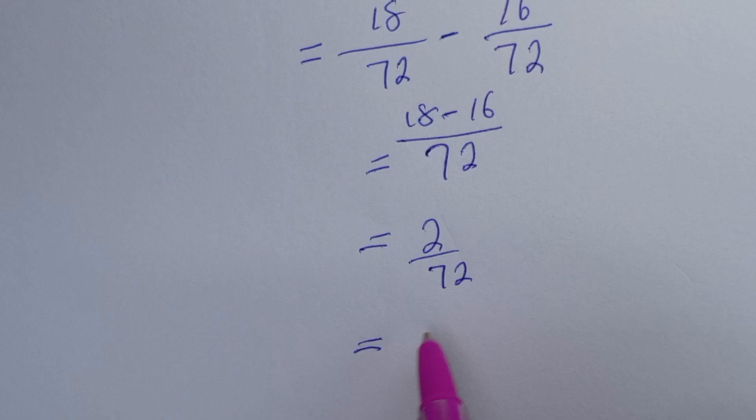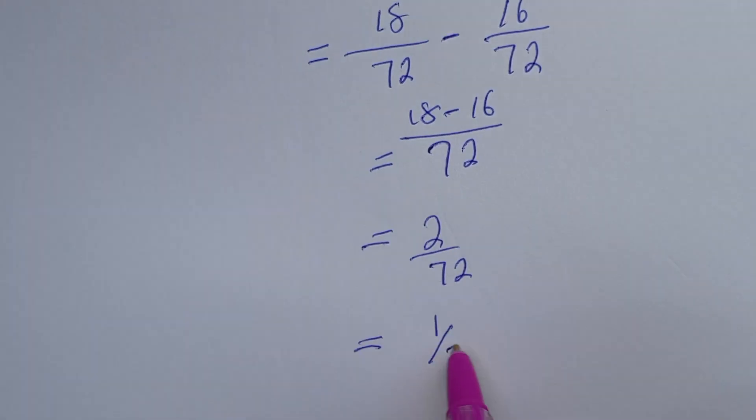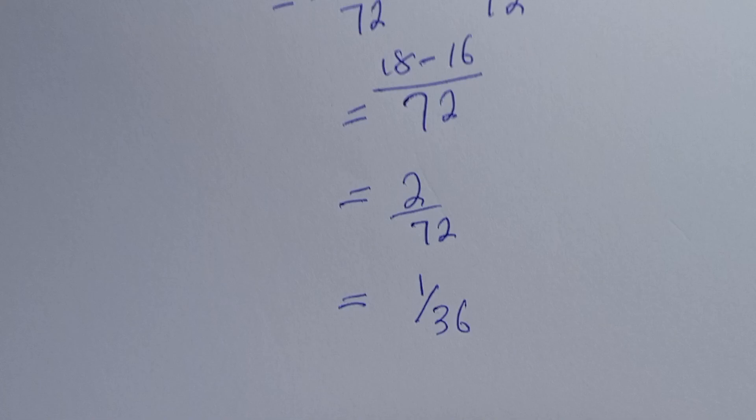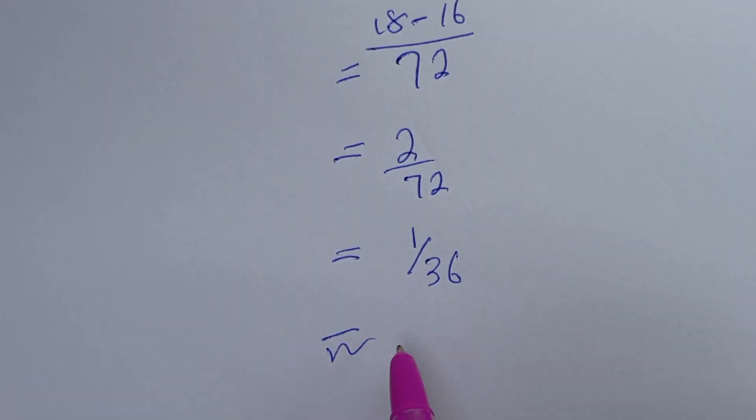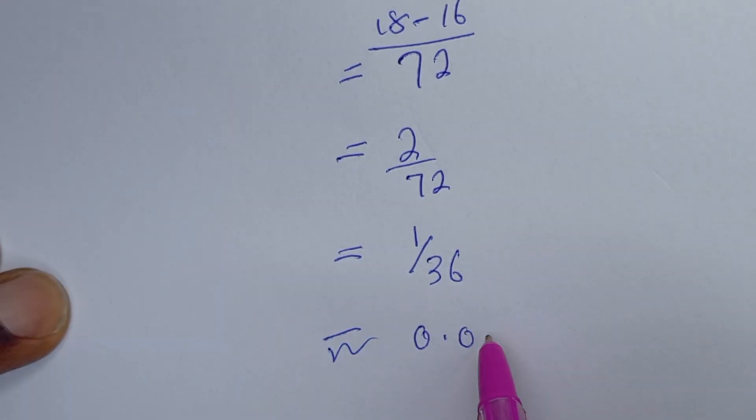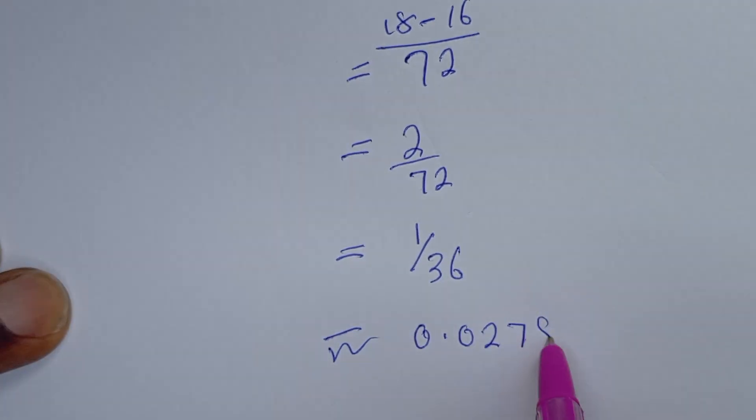This is equal to 1 over 36. Then this is approximately equal to 0.0278.